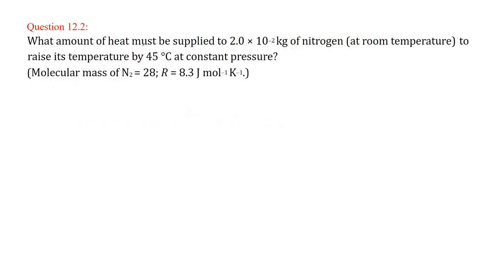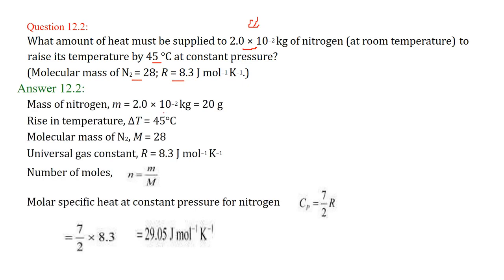What amount of heat must be supplied to 2 into 10 to the power minus 2 kg of nitrogen at room temperature to raise its temperature by 45 degree centigrade? So delta T, the temperature change, is 45 degree centigrade. This is the mass of nitrogen in kg; the molecular mass is also given, and R is also given. The mass of nitrogen is given in kg; let us convert it into grams. The rise in temperature delta T is 45 degree centigrade. The molecular mass of N2 is given as 28. The universal gas constant is given as 8.3.